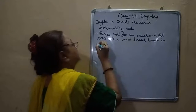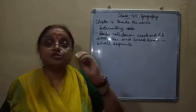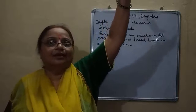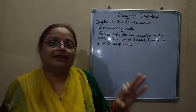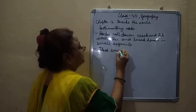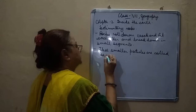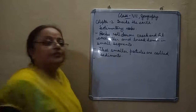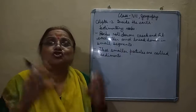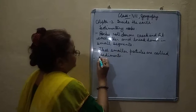In small segments, in rock pieces, these smaller particles go and settle down somewhere. These smaller particles are called sediments. They are small pieces of rock that keep moving — sediments are transported and deposited by wind, water, and so on.